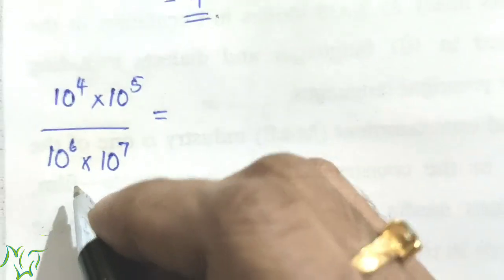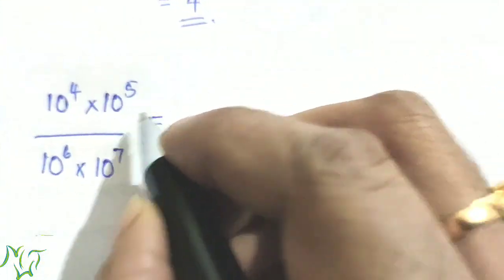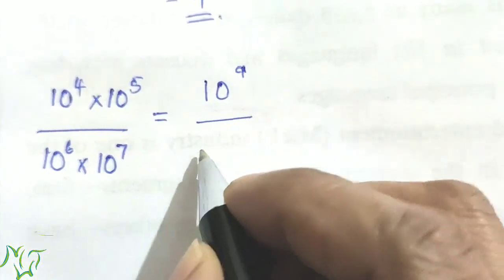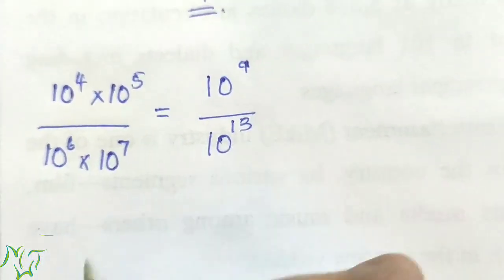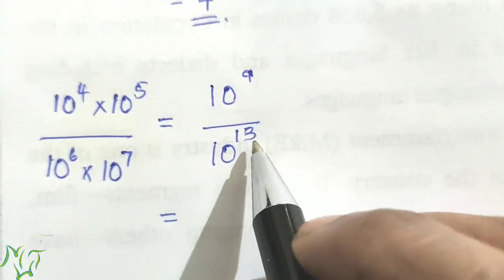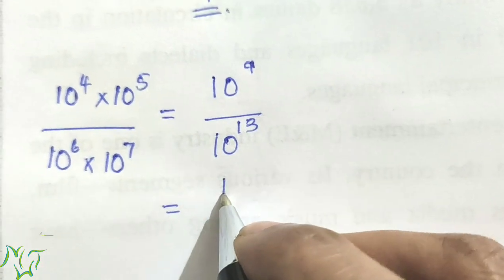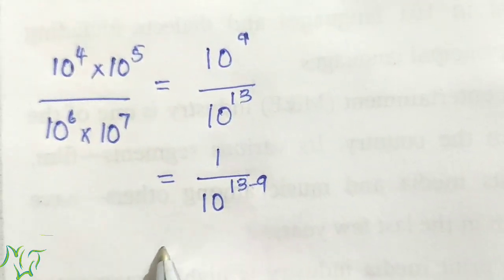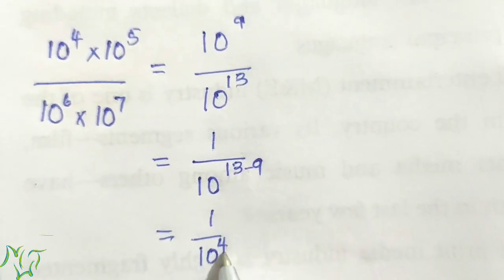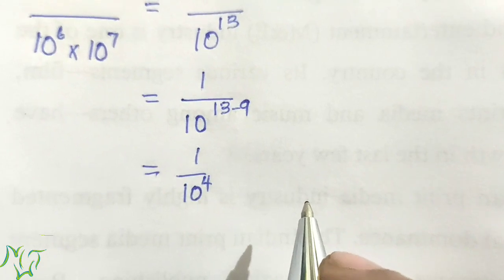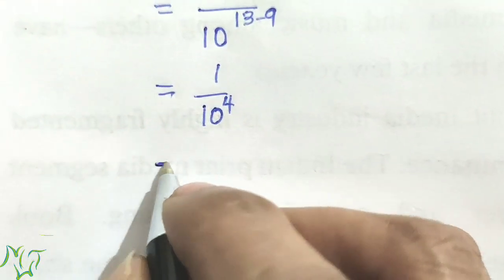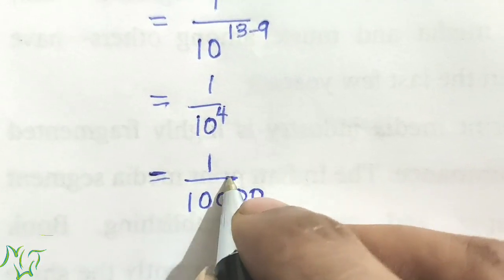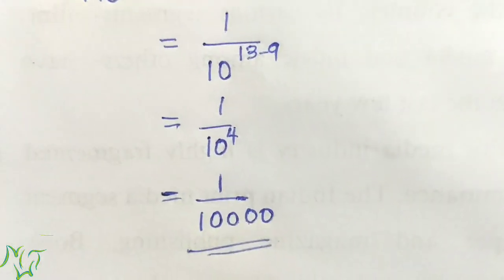Next question: 10 raised to 4 into 10 raised to 5, by 10 raised to 6 into 10 raised to 7. Using the multiplication rule in numerator: 4 plus 5 is 9, and in denominator: 6 plus 7 is 13. The power in the denominator is bigger, so we use the second rule: 1 by 10 raised to 13 minus 9, equal to 1 by 10 raised to 4, which means after 1 there are 4 zeros — so 1 by 10000.